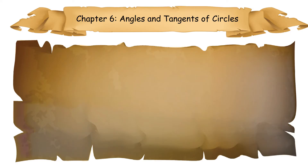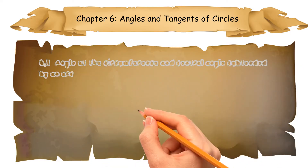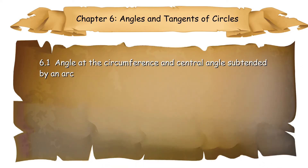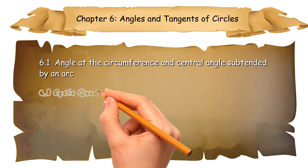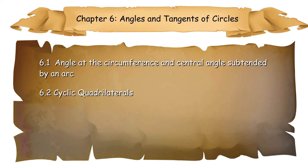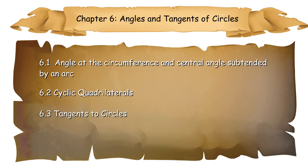In this chapter, you will learn: 6.1 Angle at the Circumference and Central Angles subtended by an arc; 6.2 Cyclic Quadrilaterals; 6.3 Tangents to Circles; and 6.4 Angles and Tangents of Circles.